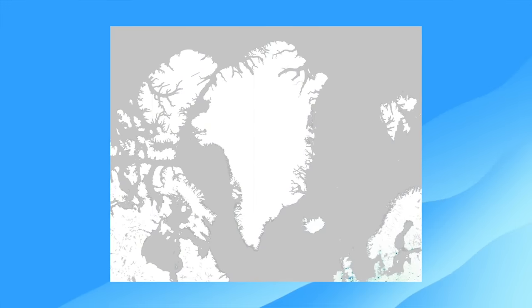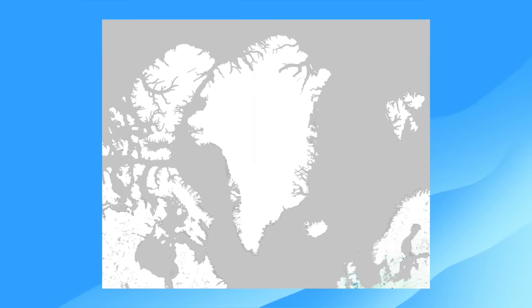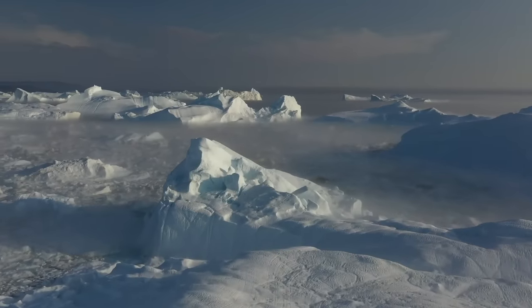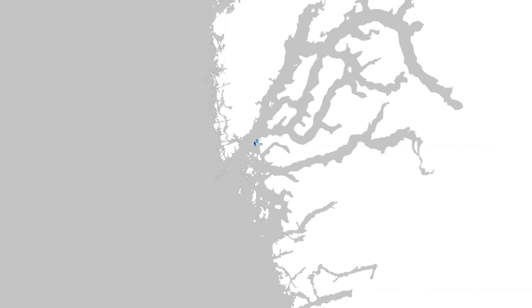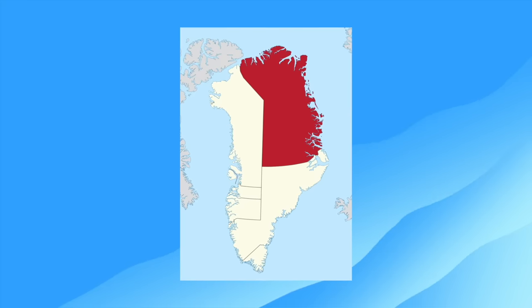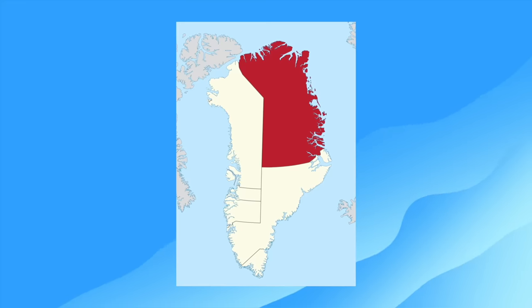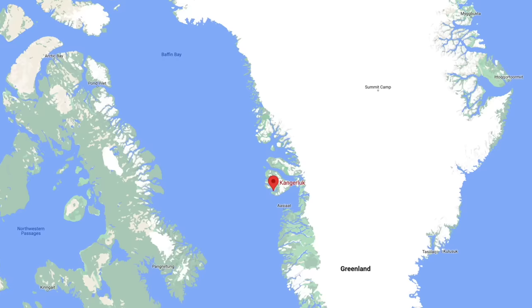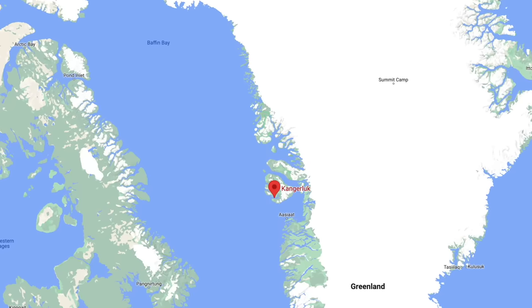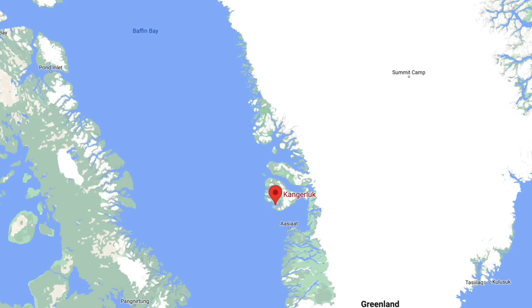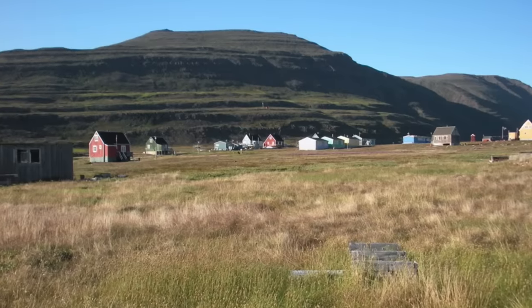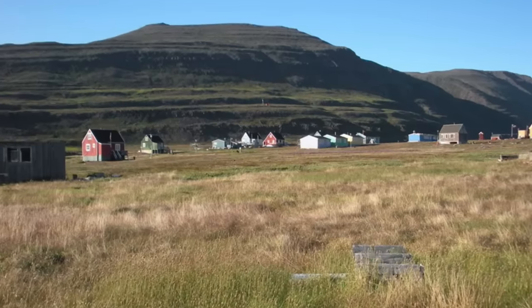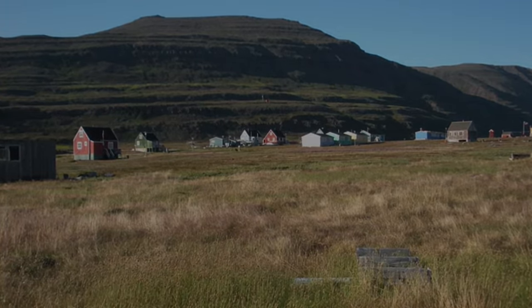Greenland is an even more extreme version of Iceland — around 21 times larger but with a population around 5 times smaller, making it the most sparsely populated territory on Earth. Around a third of the territory's total population lives in the capital Nuuk on its southwestern coast. On the map, it is all but a tiny blue dot among a colossal white island. The North East Greenland National Park covers nearly a million kilometres squared, yet no one permanently lives there. I found a settlement called Kangaluk with a population of just 13, on Disco Island on the west coast — one of the most remote inhabited places on Earth. The population has declined over the last few decades and has shrunk by two-thirds since 2010.